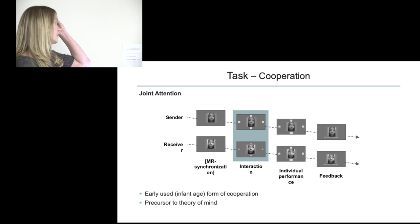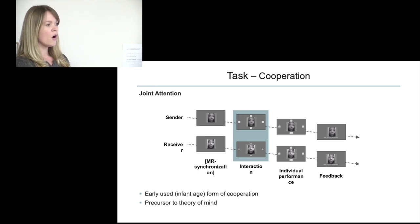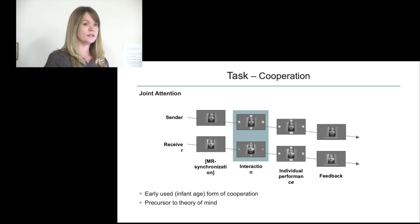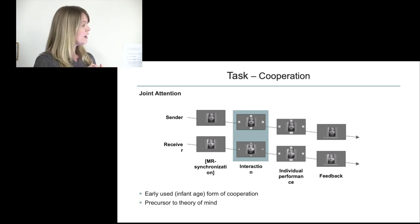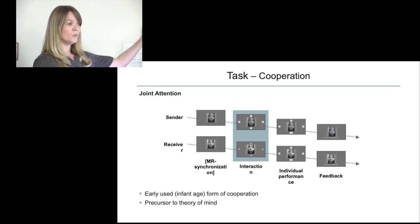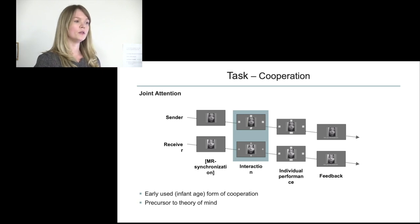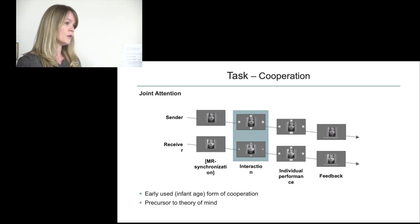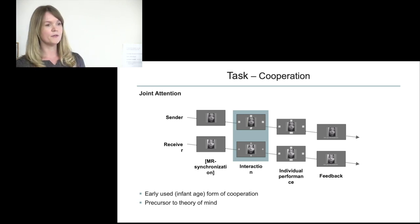The first data I'll show is from a cooperation task called joint attention. Joint attention is a very basic form of interaction we use all the time in everyday conversations — you lock eye gaze with someone and then look somewhere else to guide their attention. We also use pointing fingers to extend our eye gaze and align behavioral goals and transfer information to others. Children use it before they make use of language, and some clinical populations are affected in their joint attention performance.